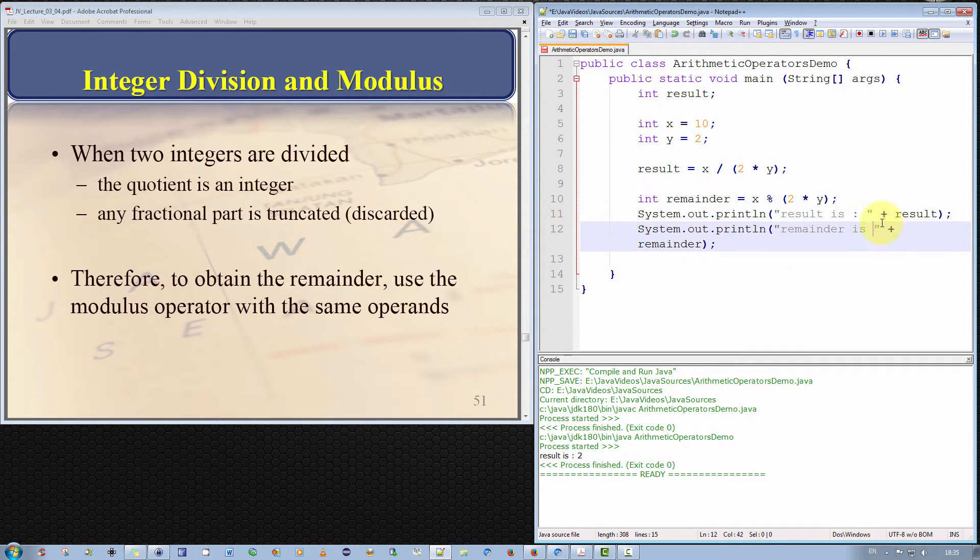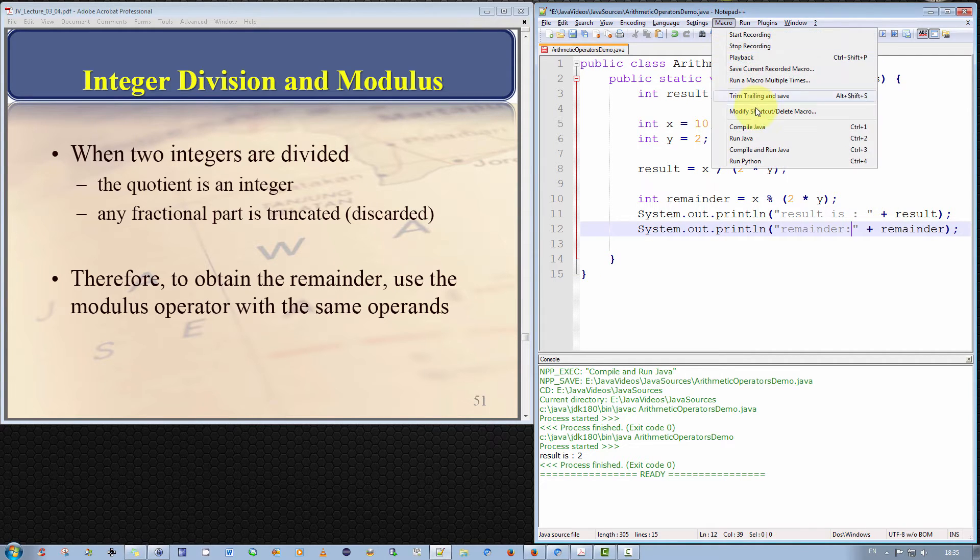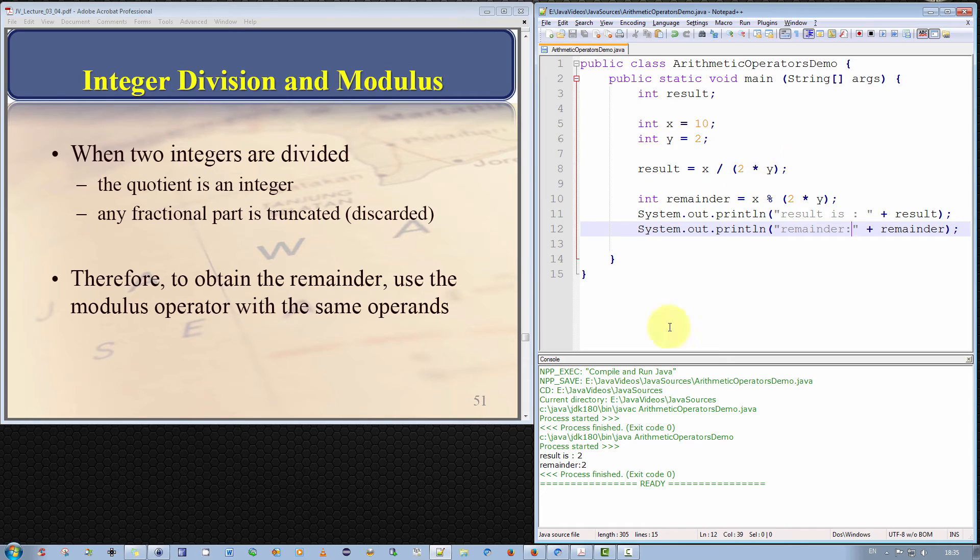Just to fit it all on one screen I shall put it like that there. So let's run that. Now it says the result is 2 and the remainder is 2. Is that correct? Well x is 10 divided by 4. 4 goes into 10 2 times which is correct and is 2 over. Okay let's try a different number.